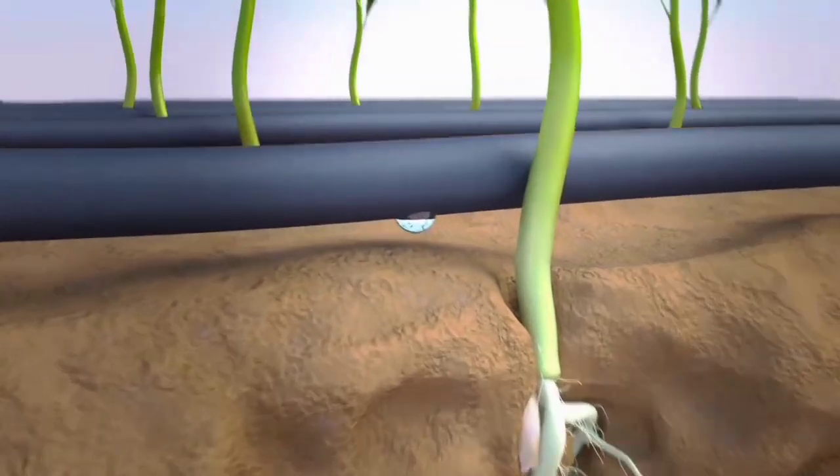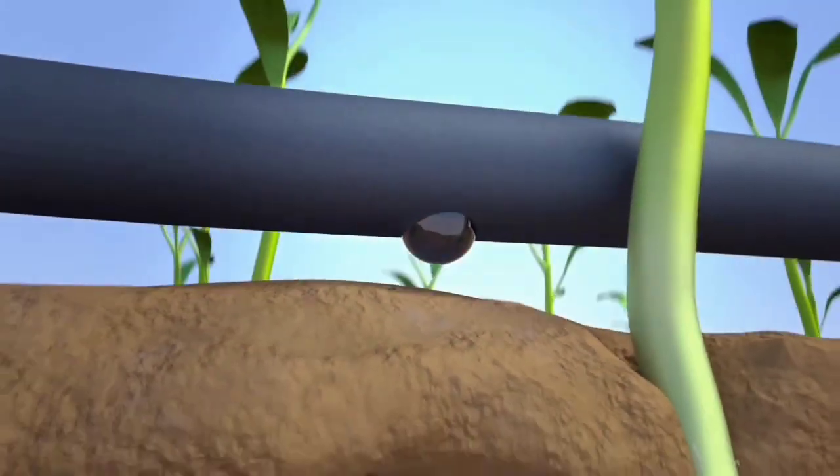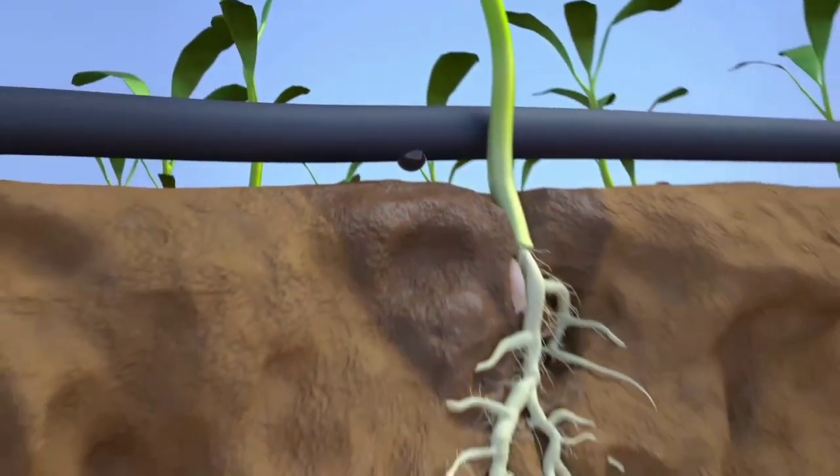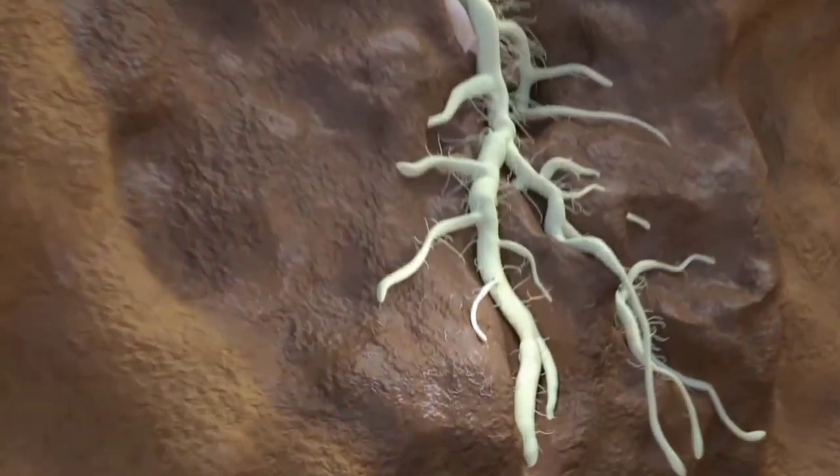Fluopuram from Bayer stops the attack. The active substance is applied to the soil via a drip irrigation system, allowing it to precisely target the root system.